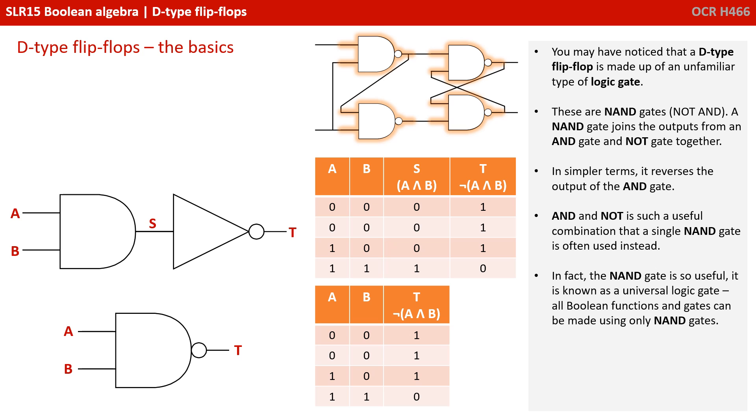AND and NOT is such a useful combination that a single NAND gate is often used instead. In fact, the NAND gate is so useful it is known as a universal logic gate. All Boolean functions and gates can be made using only NAND gates.